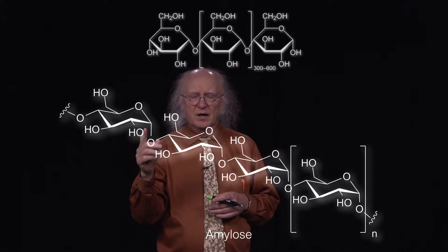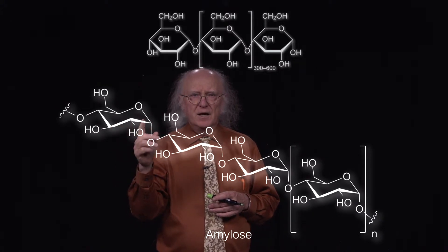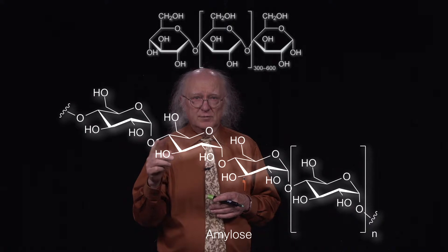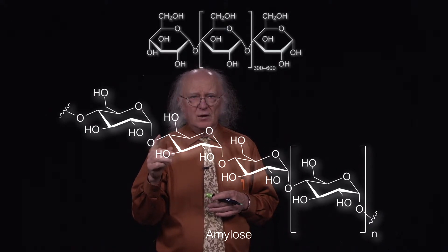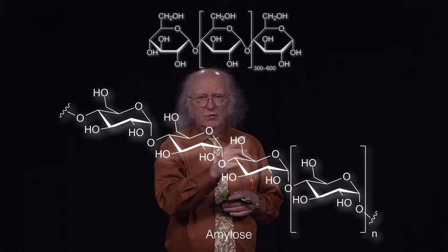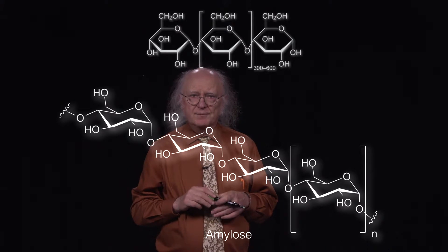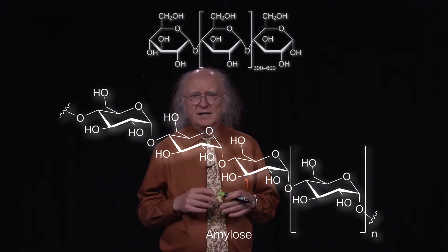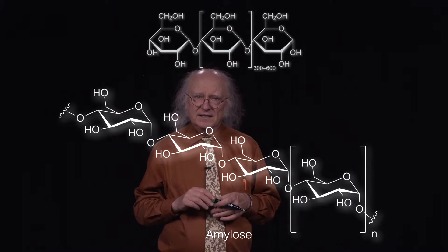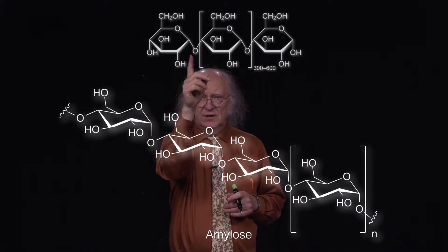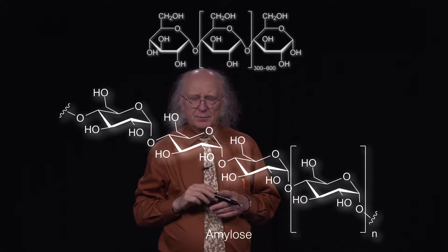For example, here, if we look at this carbon on carbon number one of the sugar right here, that carbon number one hydroxyl is linked to the hydroxyl of carbon number four of the next glucose, forming a glycosidic bond. That structure is repeated over and over all the way through the polymer we call amylose. Amylose is a plant polysaccharide, and it's very simple in that it only contains alpha-1,4 linkages, as shown at the top of the figure in a simpler designation.